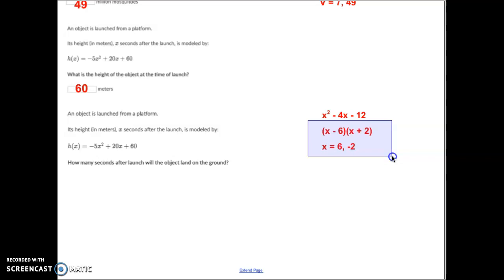Which means my x-intercepts are 6 and negative 2. Here's the deal: if the object was launched at a platform that was on ground level, the object actually would have been in the air for 8 seconds. But on Khan Academy they're making an assumption - every time they launch, they launch from zero. They always start at zero. So in that case the negative 2 would not make sense.